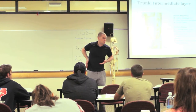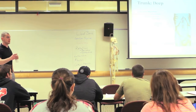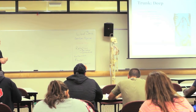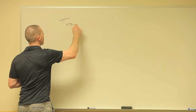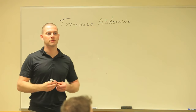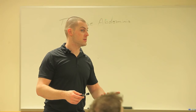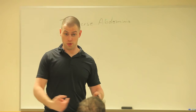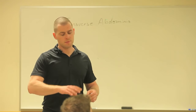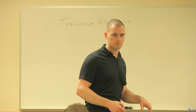Transverse abdominis. How many of you guys have heard of this muscle? Definitely a muscle a lot of people talk about — definitely a muscle of a lot of controversy. Based on its fiber direction, what joint action do you think this muscle does? The fiber direction is transverse — that's why it's called the transverse abdominis, its fibers are oriented transversely. Its origin and insertion is basically the thoracolumbar fascia — it wraps all the way around and goes right back into there.